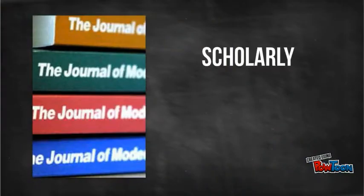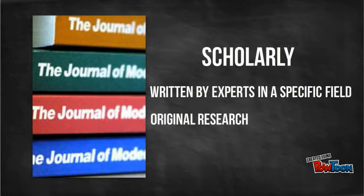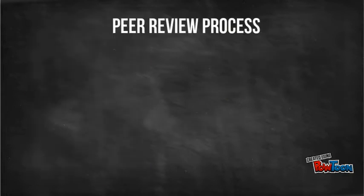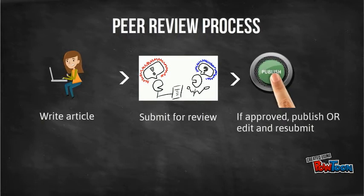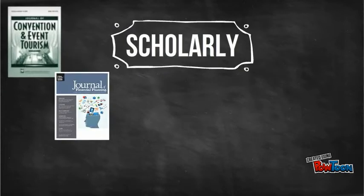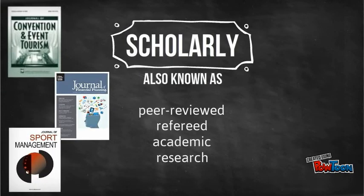Scholarly periodicals are considered such because their articles are written by experts within a specific field, and the authors are often reporting on original research. Before they are published, most scholarly articles are evaluated for quality by other experts within the field in a process called peer review. As such, scholarly periodicals are also known as peer-reviewed, refereed, academic, or research journals.